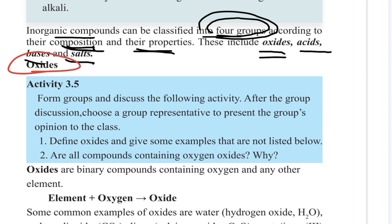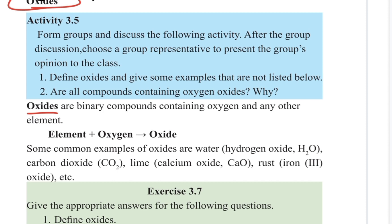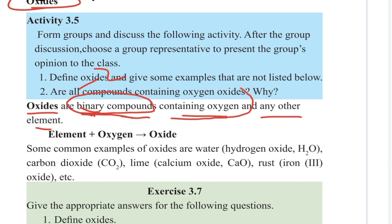Inorganic compounds — oxides are binary compounds containing oxygen and any other element. A binary compound is two elements, and one of those elements is oxygen. The element plus oxygen forms an oxide.